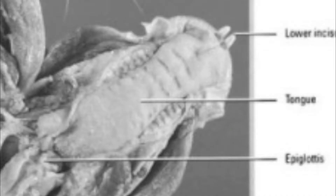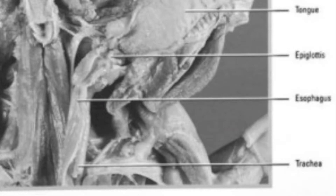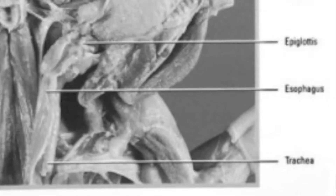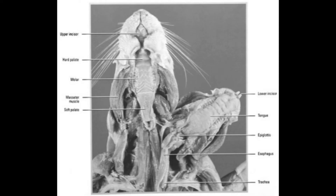The soft palate. The tongue. The esophagus. And the trachea. And that's all you'll really need to know about the rat's oral cavity.